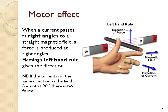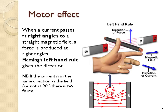Note that if the current is in the same direction as the field, i.e. along a field line, then there won't be any force produced. The reason this happens is due to the interaction between the magnetic field around a straight wire and the field between two poles. And you can see here the shape of the field is sometimes called the catapult field.